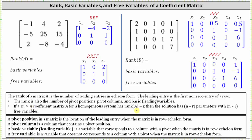Looking at our first example, we will assume this is a coefficient matrix where the variables are x sub one through x sub three. Let's begin by identifying the leading entries for the row echelon form. The leading entries are the first nonzero entry of a row. In row one, the leading entry is in row one, column one. In row two, the leading entry is in row two, column two. There is no leading entry for row three because all the elements are zero. Comparing this to reduced row echelon form, notice how the leading entries are the same.